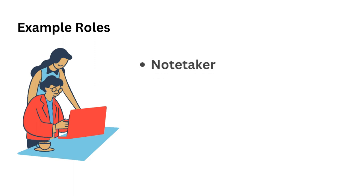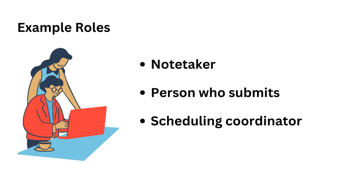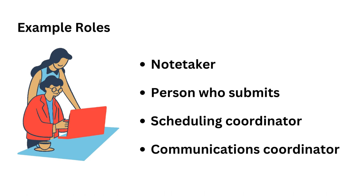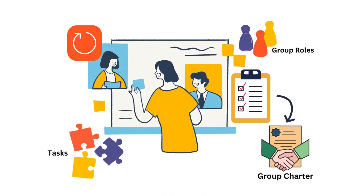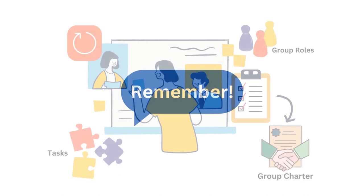Examples of common group roles include Notetaker, Someone Who Submits, Scheduling Coordinator, and Communications Coordinator. Revisit the timeline that you made to organize or document member tasks. You can document these on the group charter or team agreement. Remember, division of work can be readjusted throughout the project with communication.